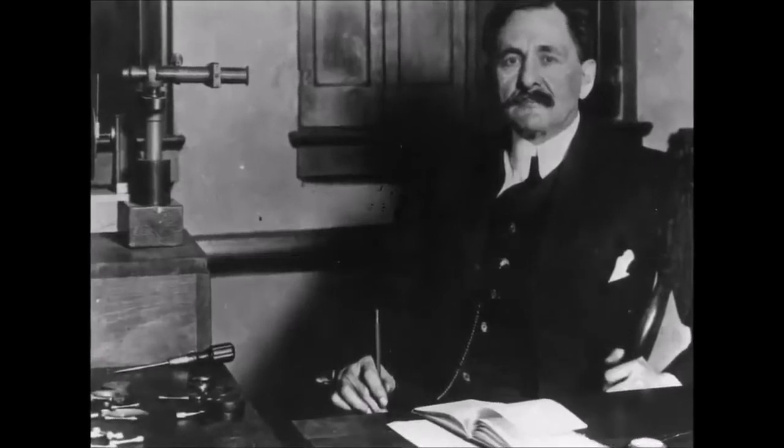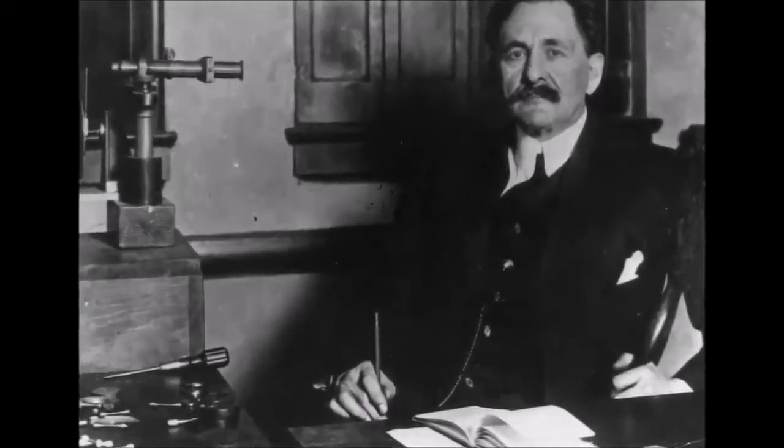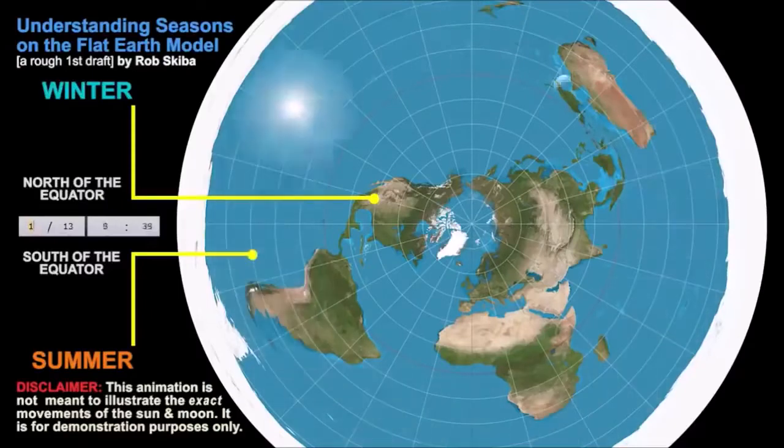In his 1881 and 1887 experiments, Albert Michelson discovered the earth was not moving around the sun.